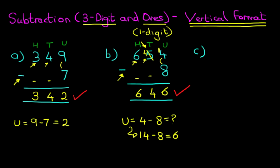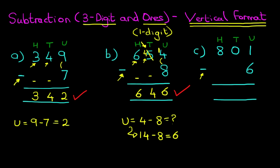We're now going to look at one which is even trickier. This time we've got 801 minus 6. It's very important that you learn the concepts. Let's label the columns: we've got units, tens, and hundreds. We are now ready to do the subtraction. As always, we start on the right-hand side first. Let's show our workings at the bottom. Units: we've got 1 minus 6.